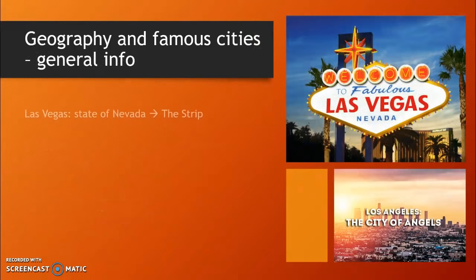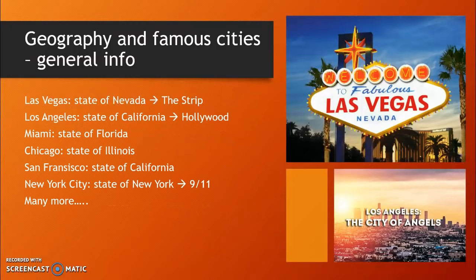Famous cities you might have heard of are Las Vegas, Los Angeles, Miami, Chicago, or San Francisco. Of course, there are many more well-known cities. Las Vegas is mostly known for its gambling area called the Strip, but Las Vegas is much larger than just that one street.